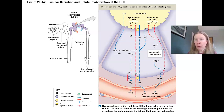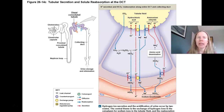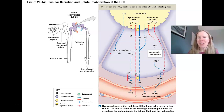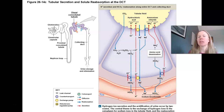Also at the DCT: calcium reabsorption occurs in response to parathyroid hormone, and you do need vitamin D for that. Acid-base balance also takes place at the DCT. Carbon dioxide and water become carbonic acid, which dissociates into bicarbonate and hydrogen. The kidney then decides — if we have enough hydrogen and want to get rid of some, we put it in the urine and reabsorb bicarbonate as a buffer; or if we don't have enough hydrogen, we bring it into the blood and excrete bicarbonate. We'll talk more about acid-base balance in the next chapter.